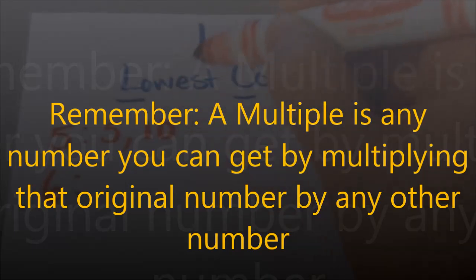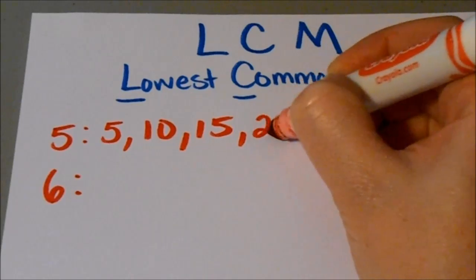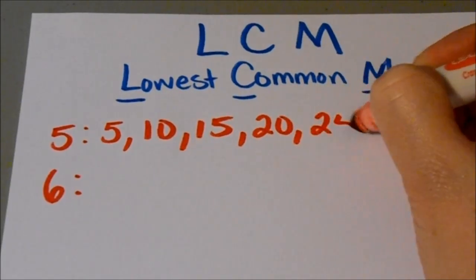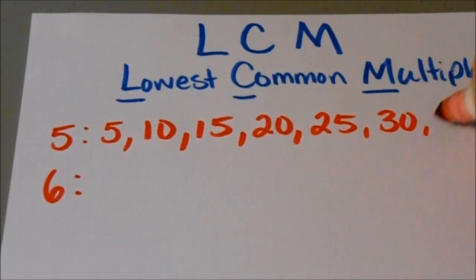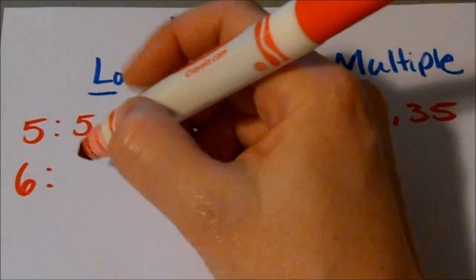5 times 3 is 15. And then we can keep going like this. 20, 25, 30, 35. So we can just make a list of all of the multiples of 5. Okay? And then we're going to do the same thing for 6.